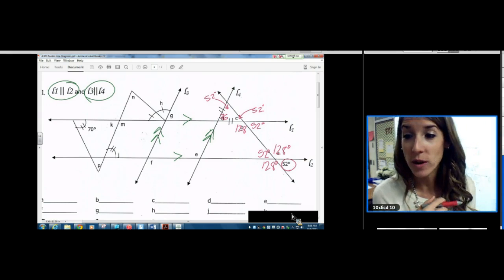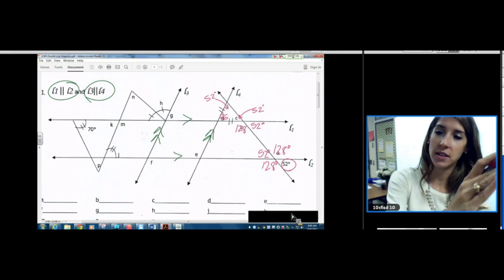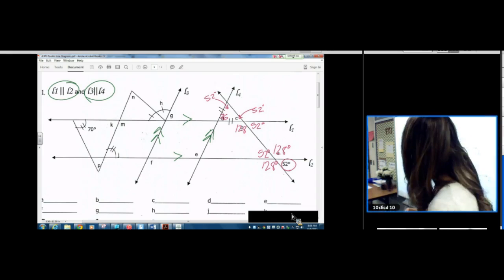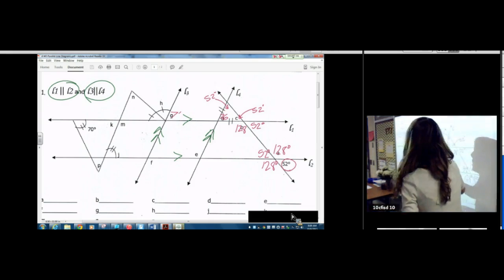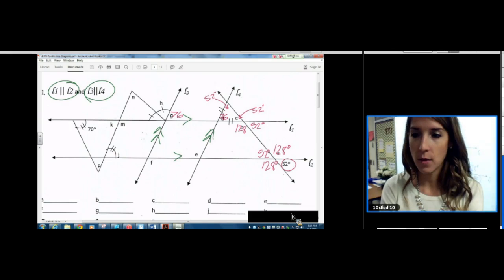Now I see some corresponding angles. We're going to try to get to the other side of the picture. So D is 76 and it's corresponding with G. Corresponding angles. So we're using our vocab.